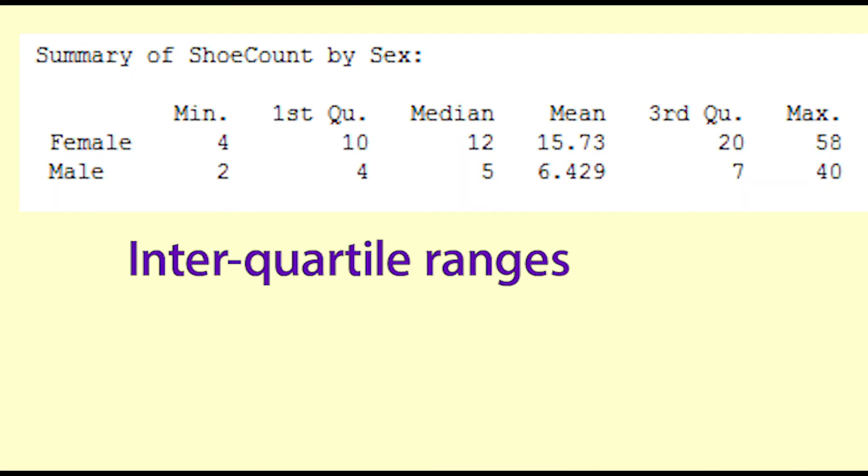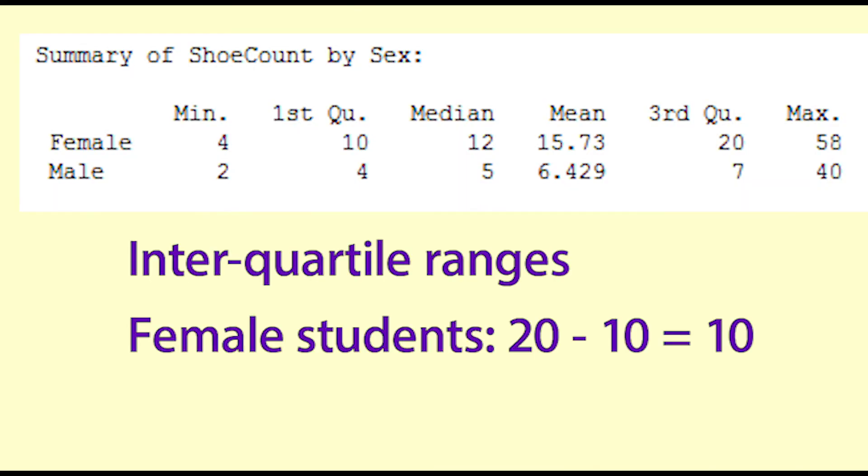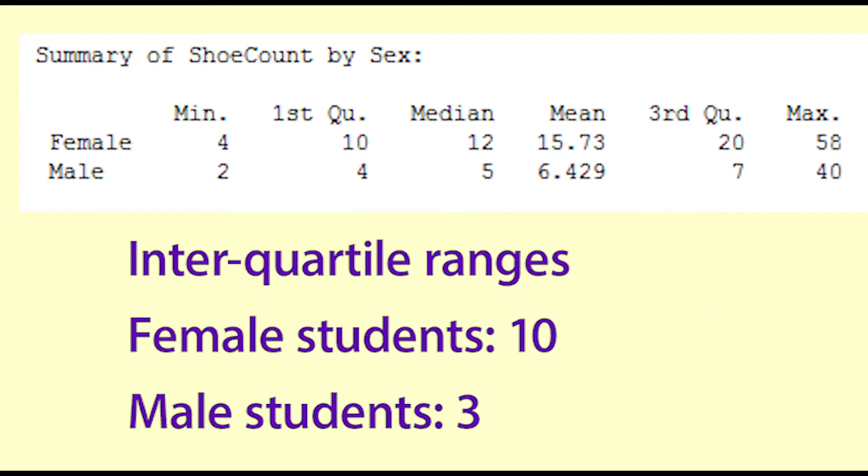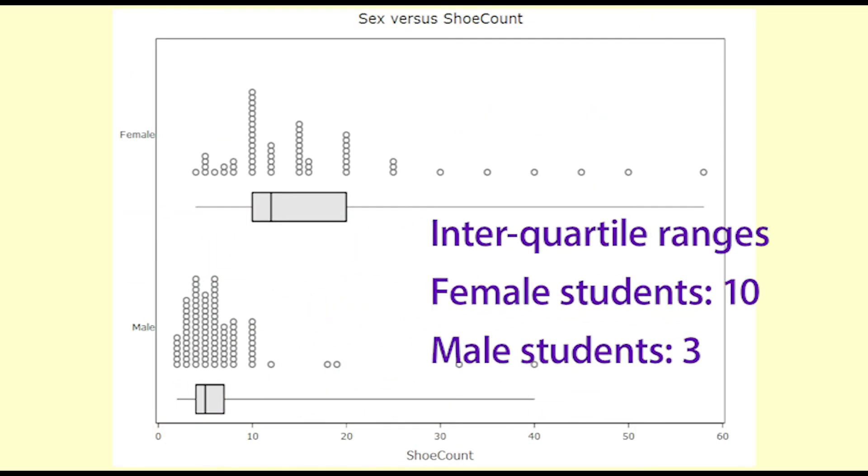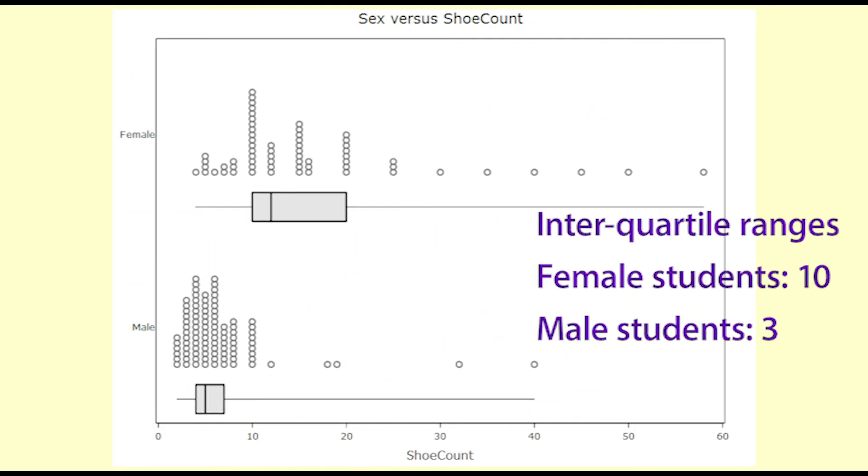The interquartile ranges are as follows. For female students 20 minus 10 equals 10. For male students 7 minus 4 equals 3. So the interquartile range for the female students is 10. The interquartile range for the male students is 3. You can see that the box plot of the number of shoes for female students is much wider than the box plot for the number of shoes for male students.